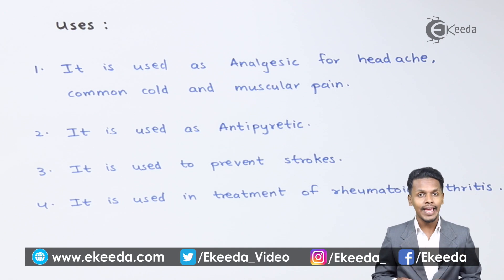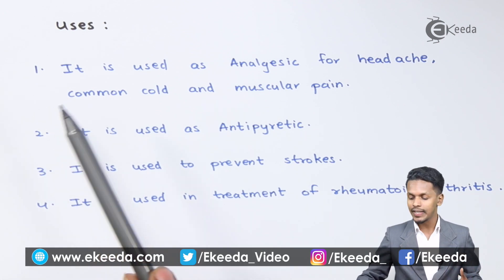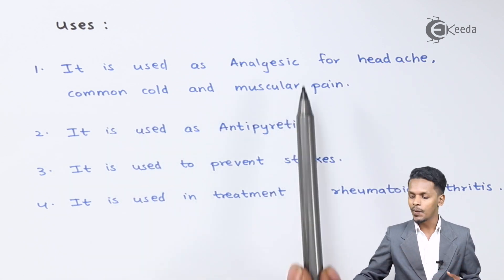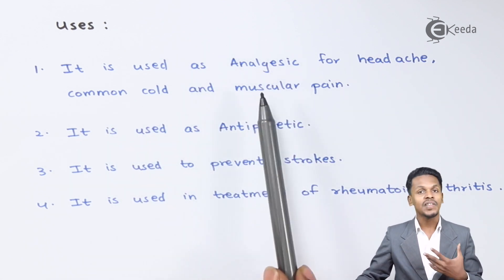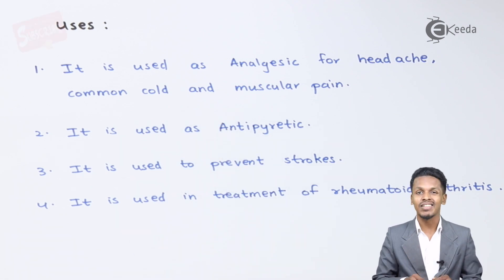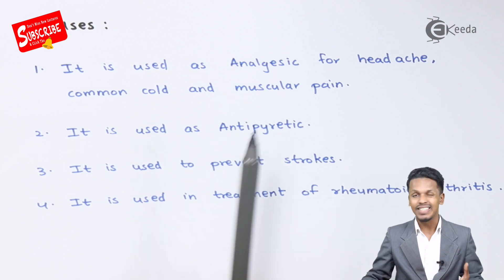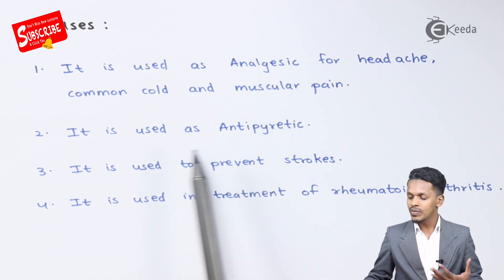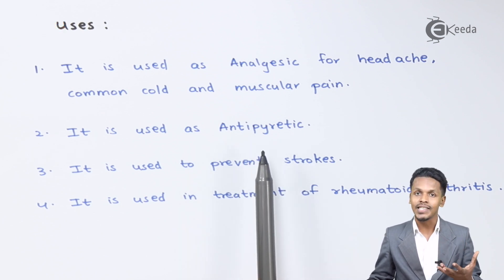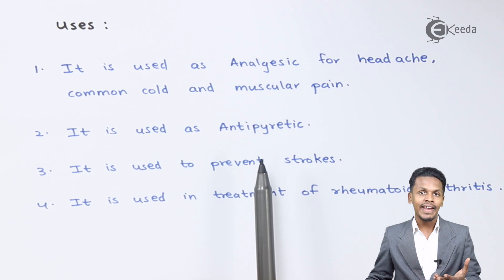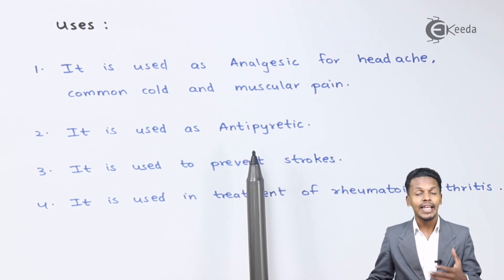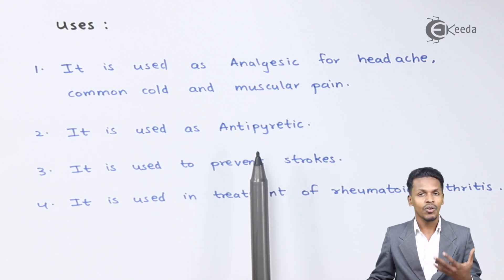Here are some uses of aspirin. First, it is used as an analgesic for headache, common cold, and muscular pain. It is widely used because it is not narcotic in nature, so a doctor can prescribe this medicine. It is also used as an antipyretic — whenever a person gets high fever or their body temperature rises, they can consume antipyretic drugs to lower their temperature.